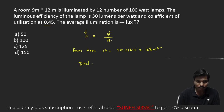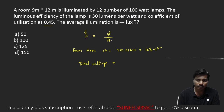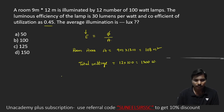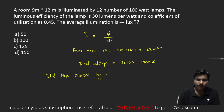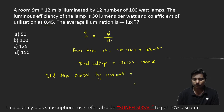What is the total wattage? Total wattage: 12 lamps of 100 watts each, so 12 × 100 = 1200 watts. Now what is the total flux emitted by these 1200 watts?